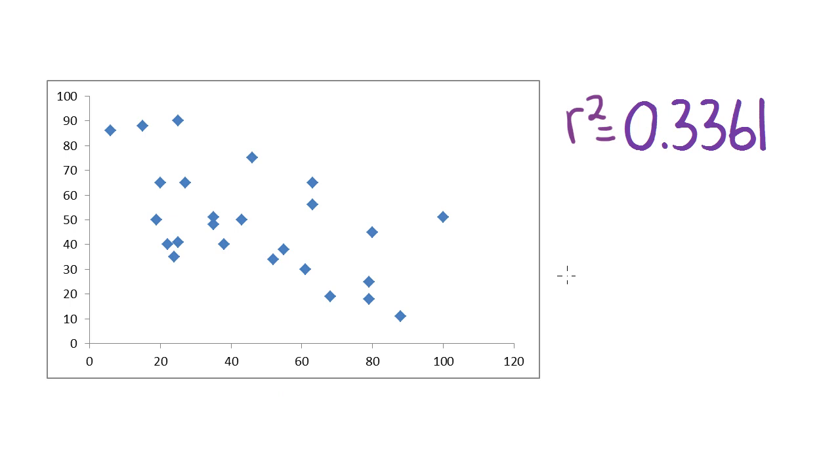And finally, what about going in the other direction? Here's a scatter plot that has an r squared value of 0.3361. And say you've been given this in the question and asked what Pearson's product moment correlation coefficient is, given that you know this r value. So we know r squared, we're trying to find r.